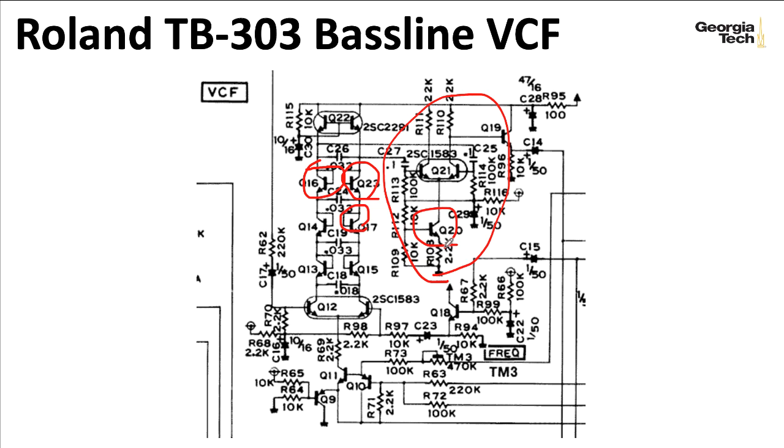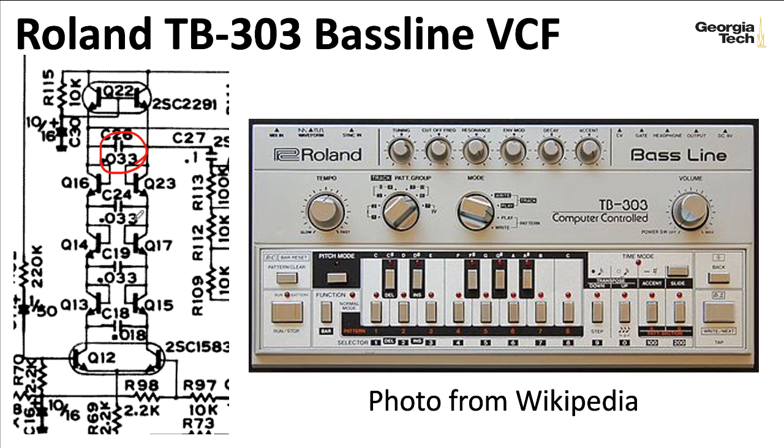What's interesting about this filter is besides the fact that it's a diode filter, if you look at it closely, not all the capacitors are the same. I'm not aware of any Moog ladder filters where they use different capacitor values. But this one has a smaller capacitor in that first stage, which presumably has some interesting effect on the sound.